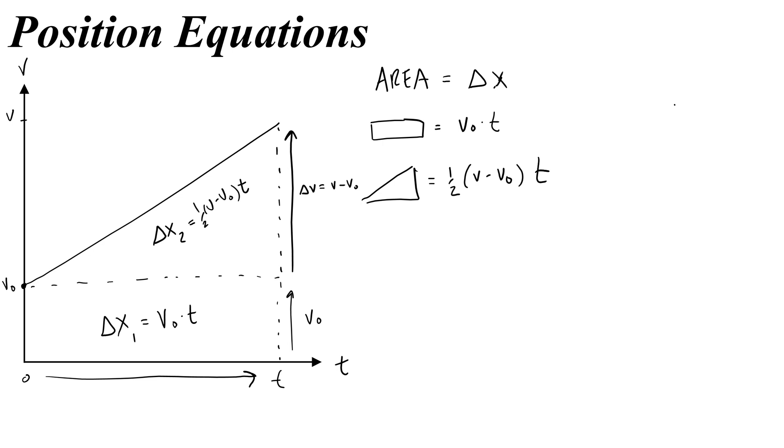Okay, so if I want the total area, which that's what we'll call delta x, then I just need to add those two things together. One-half v minus v naught t, plus v naught times t. Normally, we don't use the equation in this form. We try and simplify it a little bit. And what we're going to do is distribute the one-half, so that we're going to get one-half v times t minus one-half v naught times t, and then add v naught t. Now, if I combine these two terms, I'm going to get v naught times t minus half of a v naught times t. That's just going to give me a positive half v naught times t.